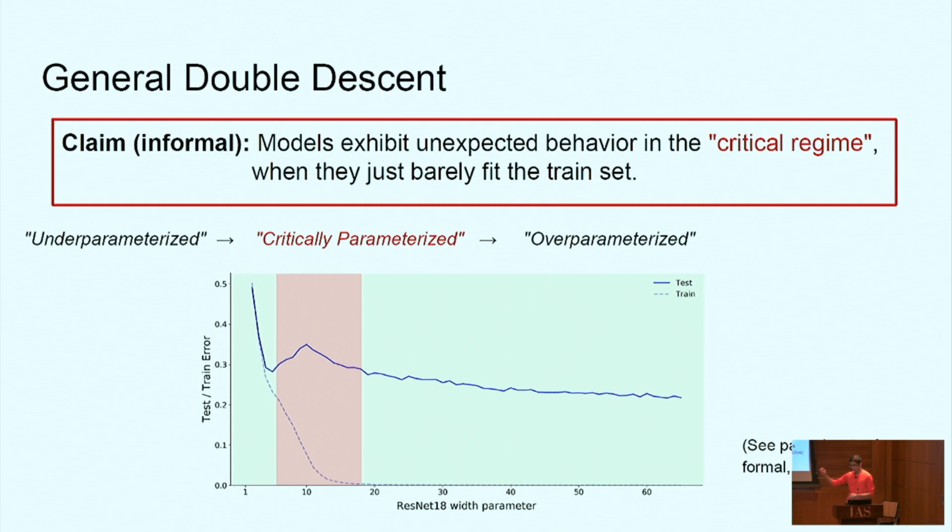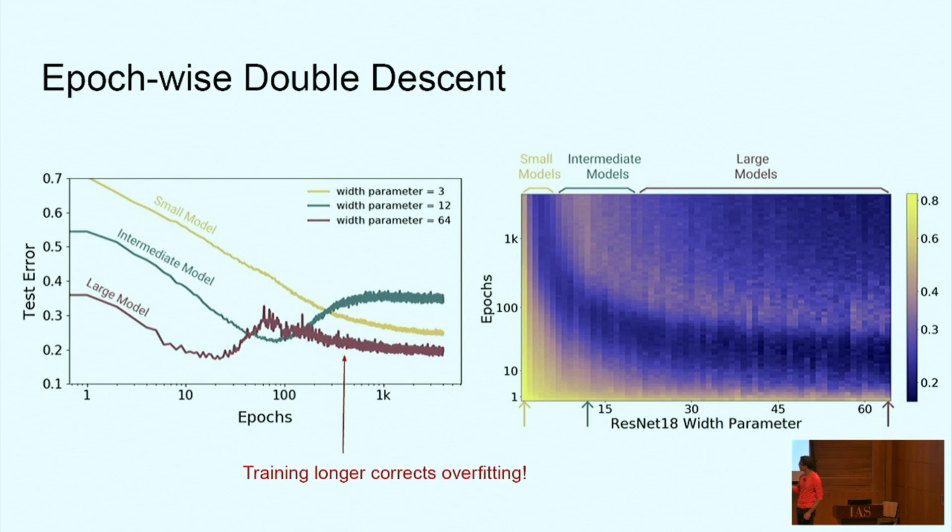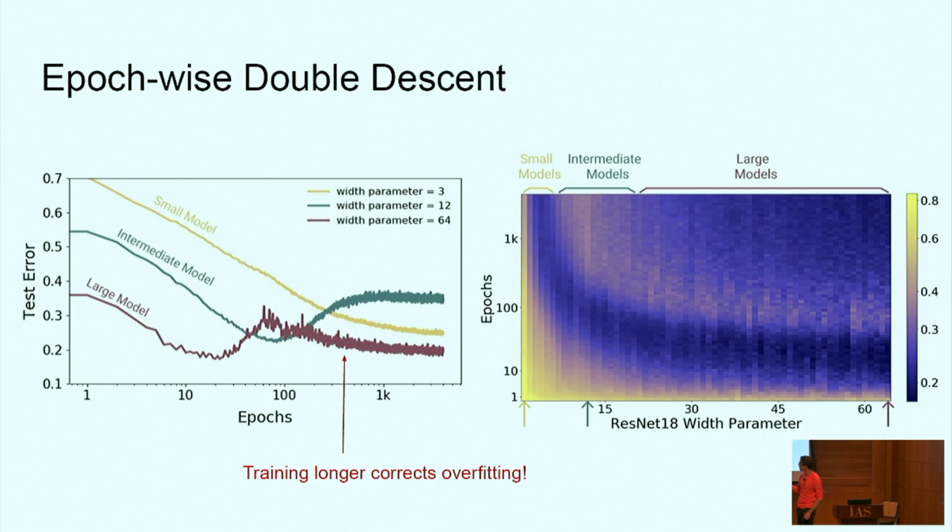The general phenomenon that weird behavior occurs in the critical regime is universal. Now how this behavior manifests depends on aspects of the problem, and in particular it's especially strong in settings with label noise. For model-wise double descent we do have settings where we see the same plot without label noise. For epoch-wise double descent we've only observed it in settings with label noise, but it's unclear if this is fundamental. I suspect it won't be, because for example you can have label noise that's pseudorandom, so the base optimal is still 100%, but if the noise is pseudorandom with respect to the classifier, then you'll still get it. I don't think the noise is actually changing anything fundamental about the problem, it's just making the problem harder. Let me just get through this.